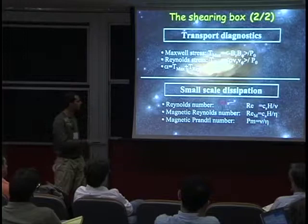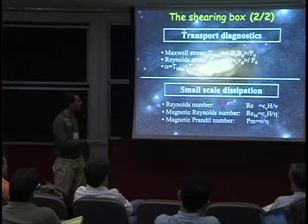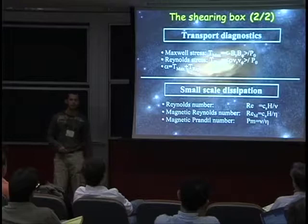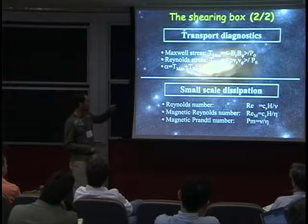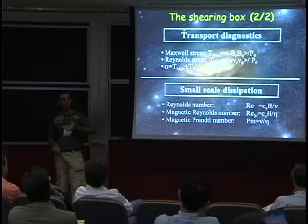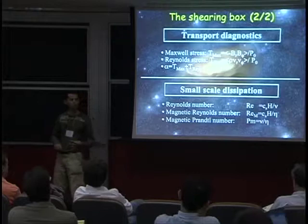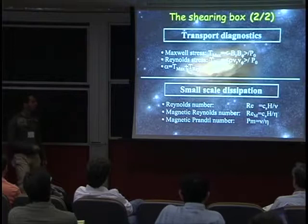For those coming from the turbulence community, be aware that these Reynolds numbers are based on the speed of sound and not on the velocity fluctuations. If you were to use Reynolds numbers based on velocity fluctuations, as is commonly done in the turbulence community, they would be in general an order of magnitude smaller, because MHD turbulence driven by the MRI is subsonic with velocity fluctuations of the order of 10% of the sound speed.